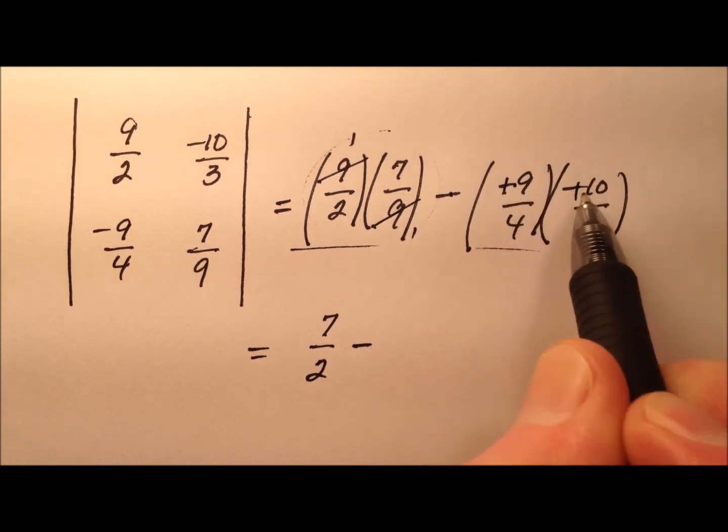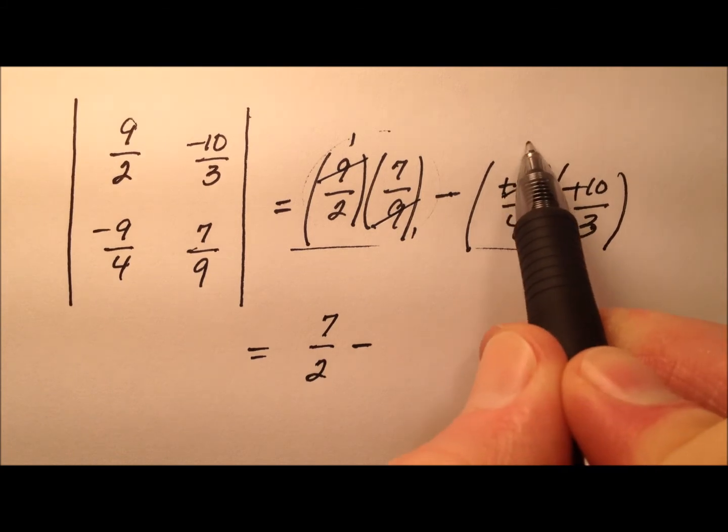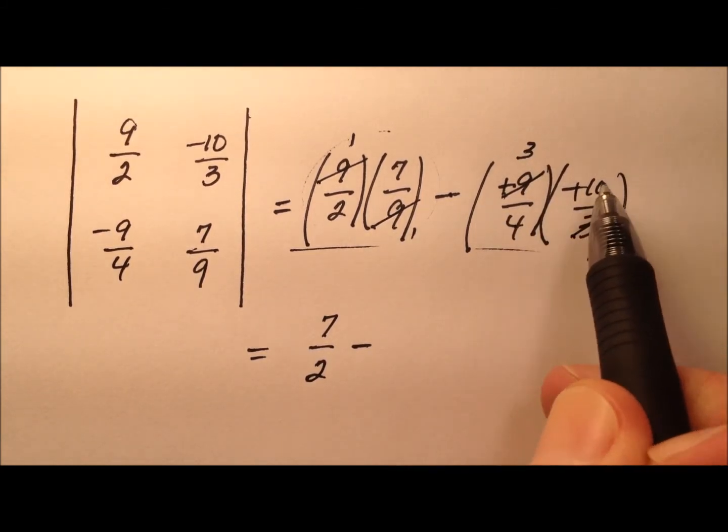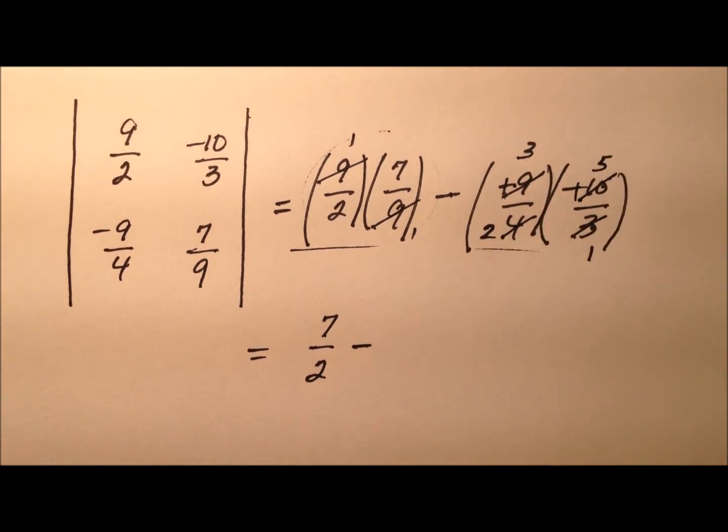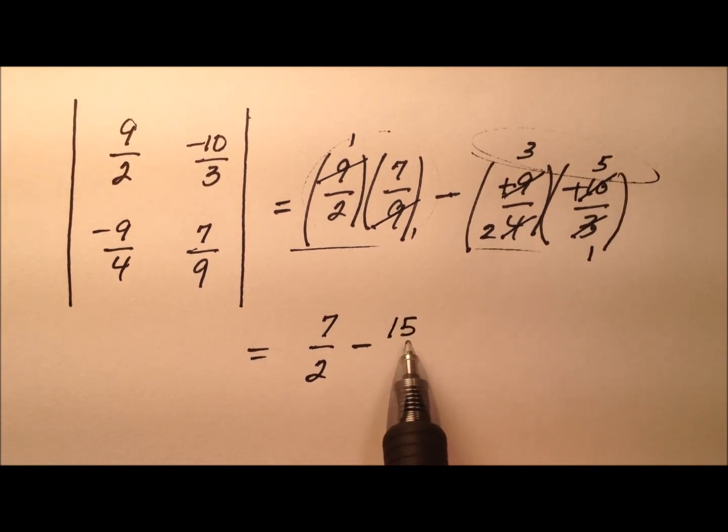Looks like these are both negatives, so we can cancel those negatives out. And between the 9 and the 3, it looks like I can cancel down to 3 and 1 respectively. And between the 4 and the 10, looks like I can cancel the 2 out, so 2 and 5 respectively. So, I multiply across, looks like 15 halves.